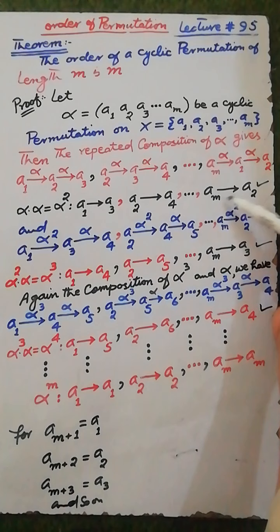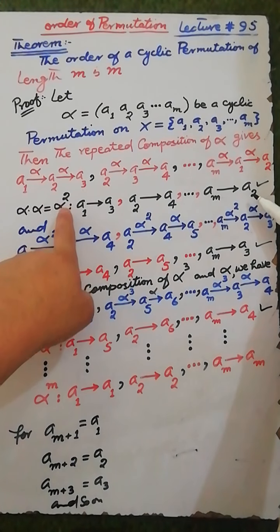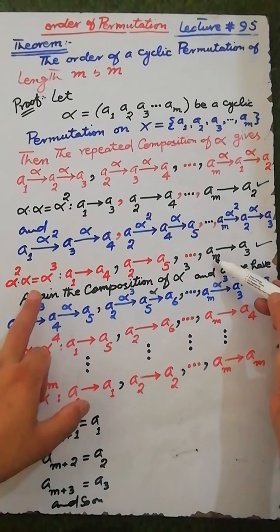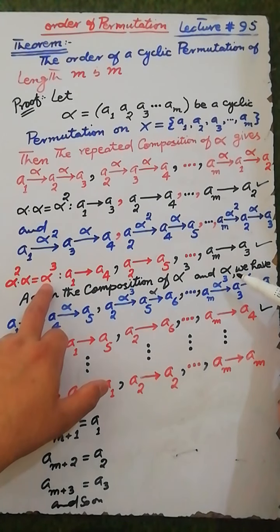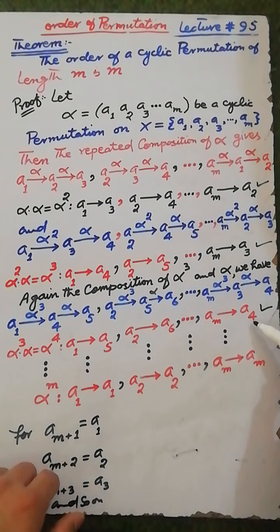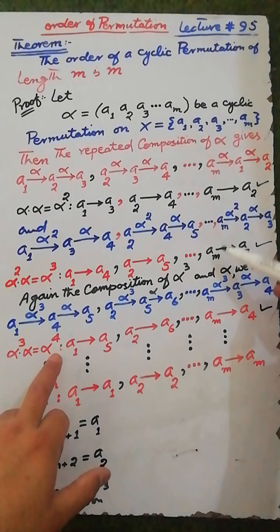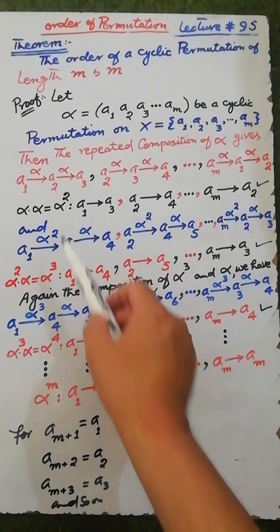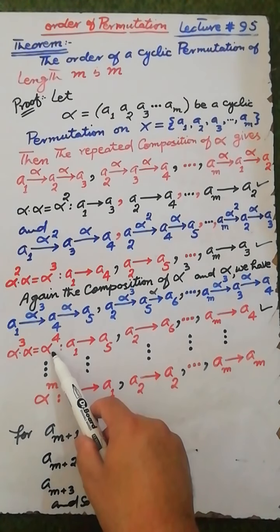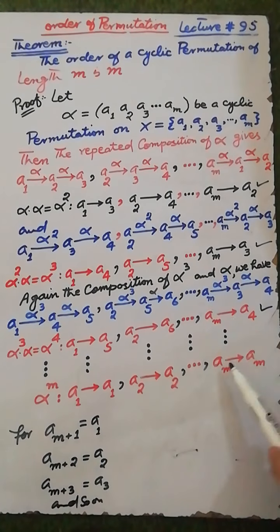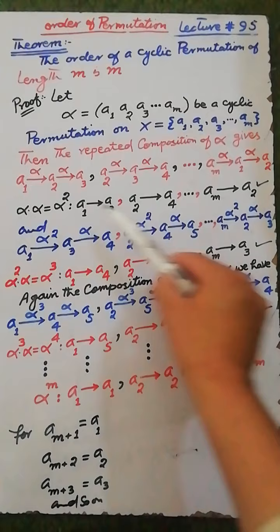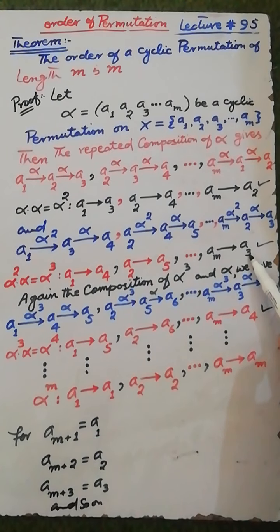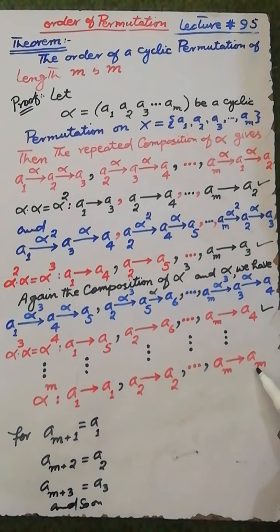In alpha squared, am maps to a2 where 2 is the power of alpha. In alpha cubed, am maps to a3 where 3 is the power. In alpha to the fourth, am maps to a4 where 4 is the power. So am is fixed in each calculation — in alpha squared, alpha cubed, and alpha to the fourth — and in alpha to the m, am maps to a(m), where m is the power of alpha.